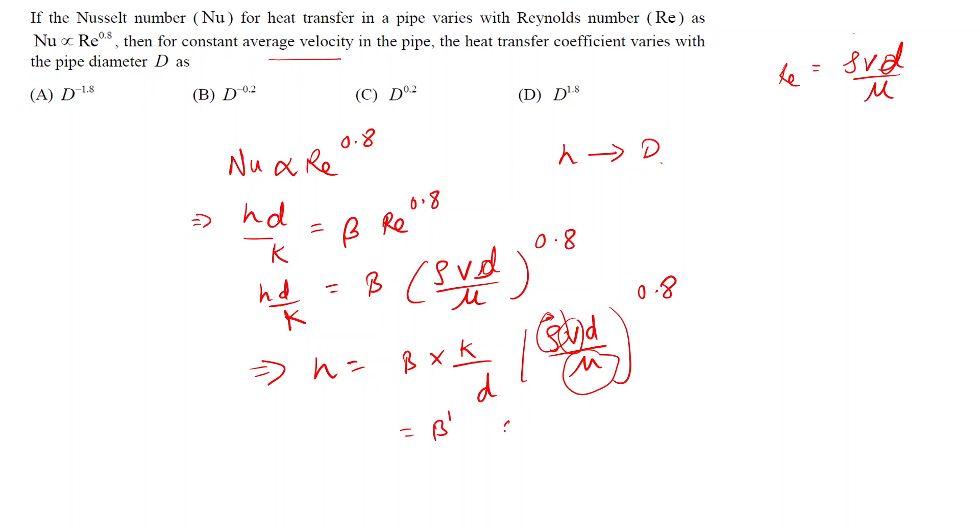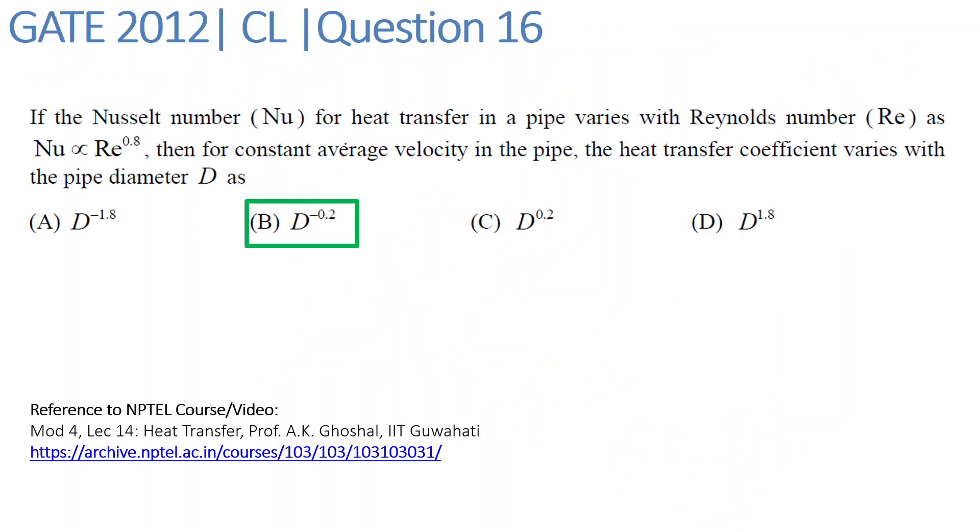When D raised to 0.8 upon diameter, H is equal to beta dash times diameter raised to minus 0.2. That is, we can write that heat transfer coefficient H varies as diameter raised to minus 0.2. So from the given options, you can select option B as the correct option.